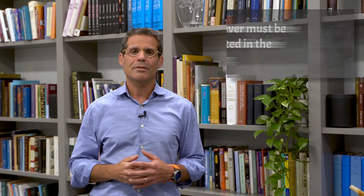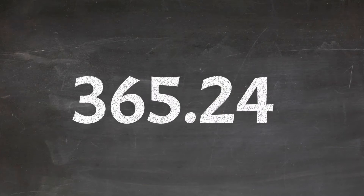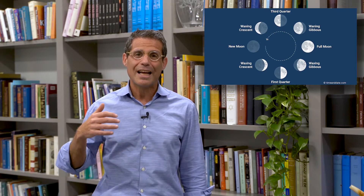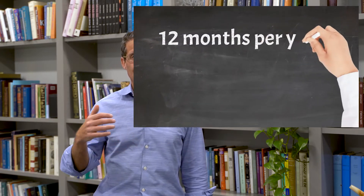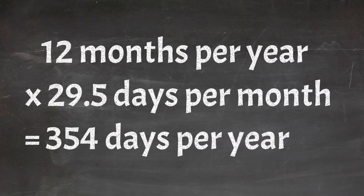So where's the problem? Let's do some simple math. The Gregorian calendar is solar, based on the number of days it takes the earth to complete an orbit around the sun, which is 365.24 days. A lunar month has an average of 29.5 days. 12 months per year times 29.5 days per month equals 354 days per year. As you can see, the lunar year is 11 days shorter than the solar year.